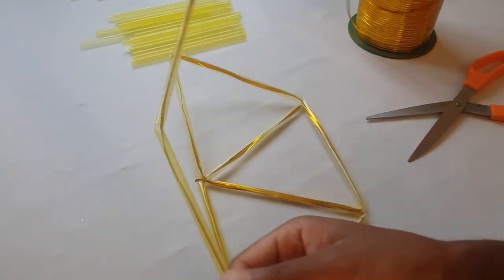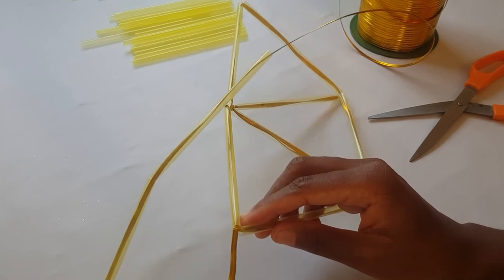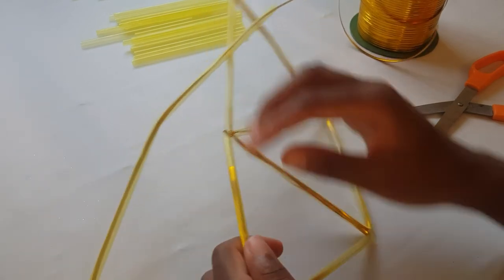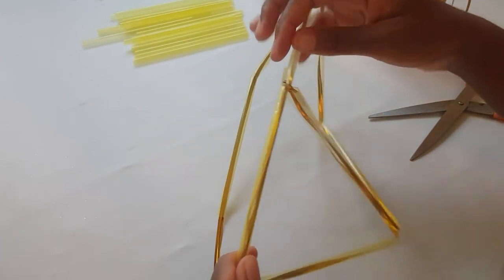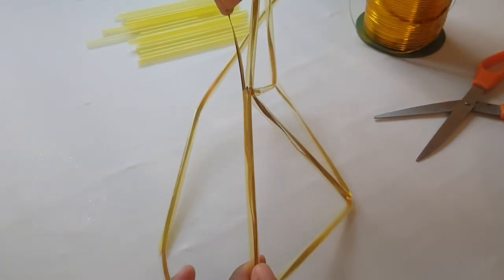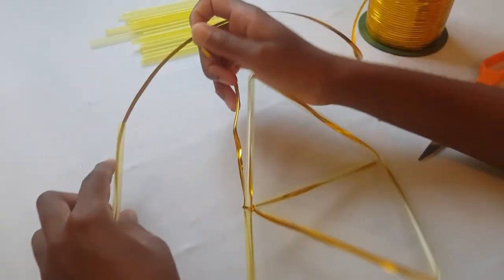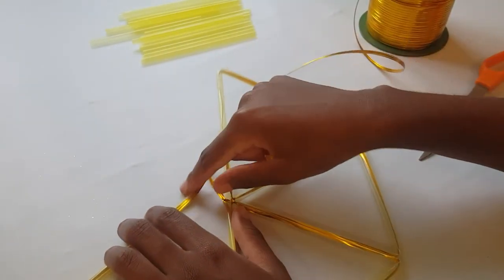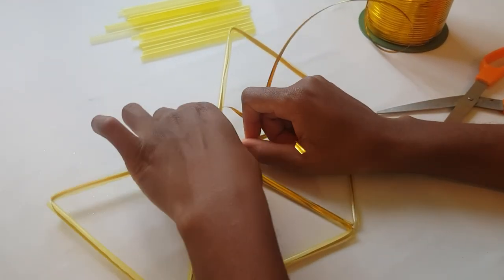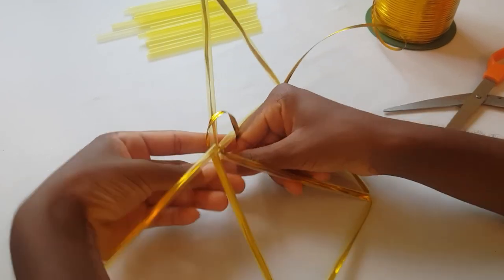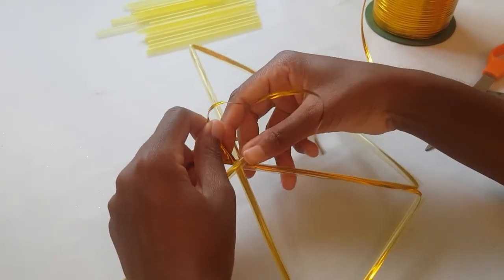I'm just going to run this through this straw right here and pull it out the other side. Now we want to attach the other end right at this section here, so we're just going to wrap the gold wire around it to secure it right at this section.